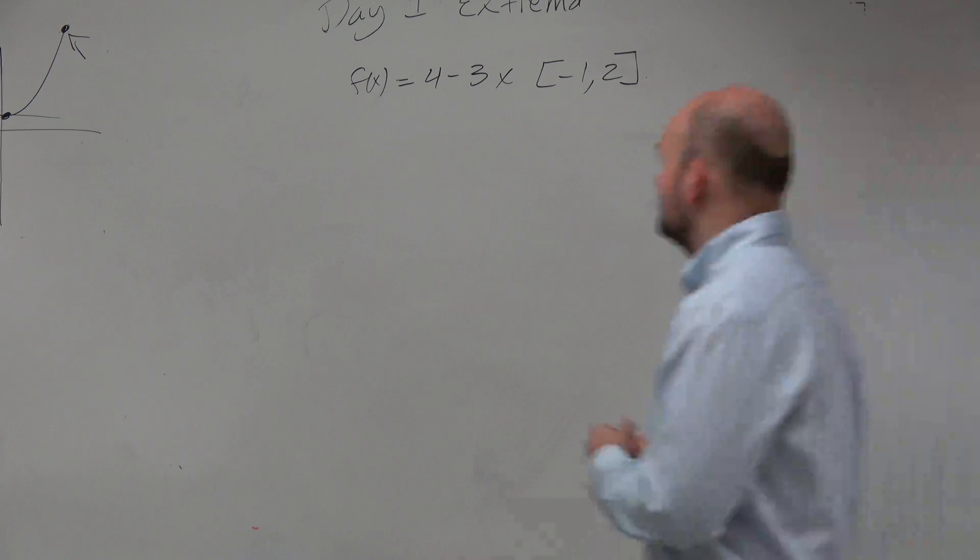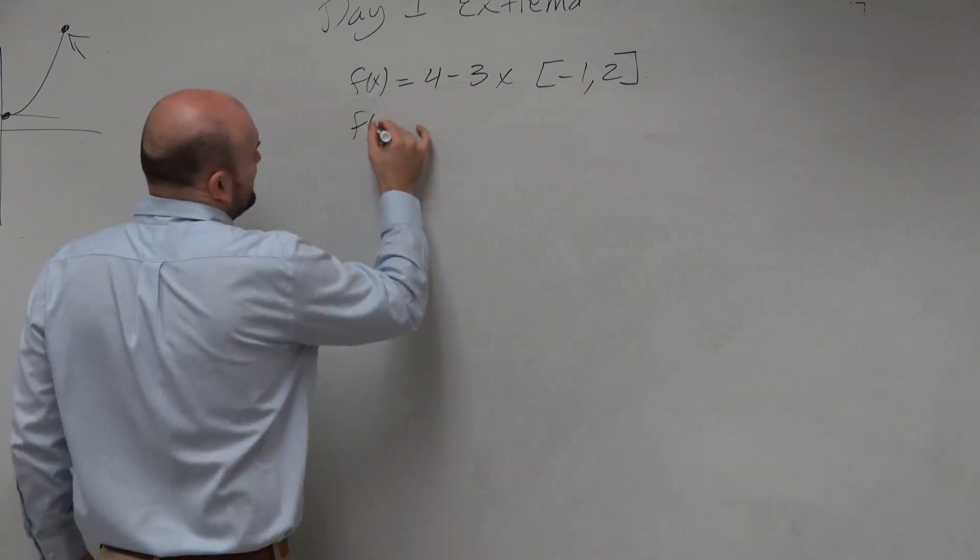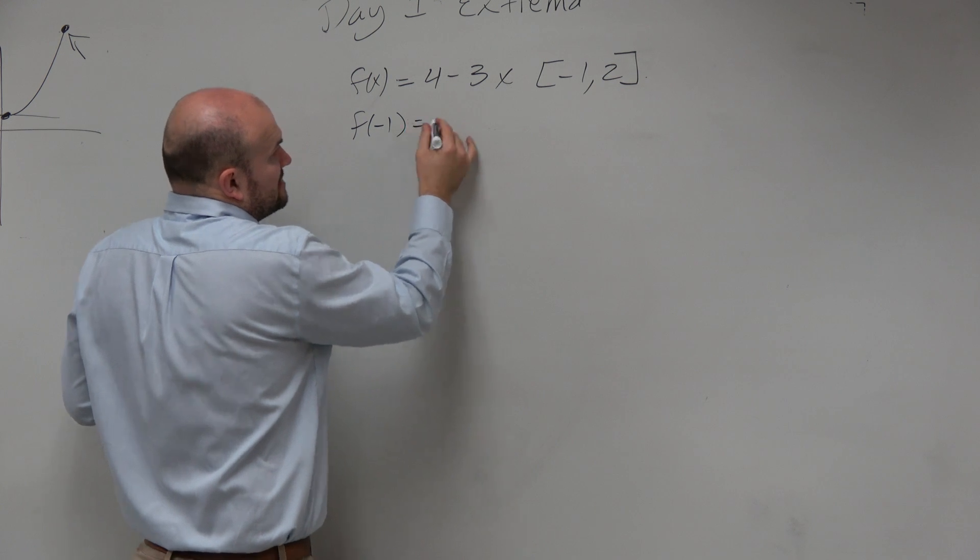Let's just go and test the endpoints and see what we have. So if we have f of negative 1, because again, we know the graph is continuous.